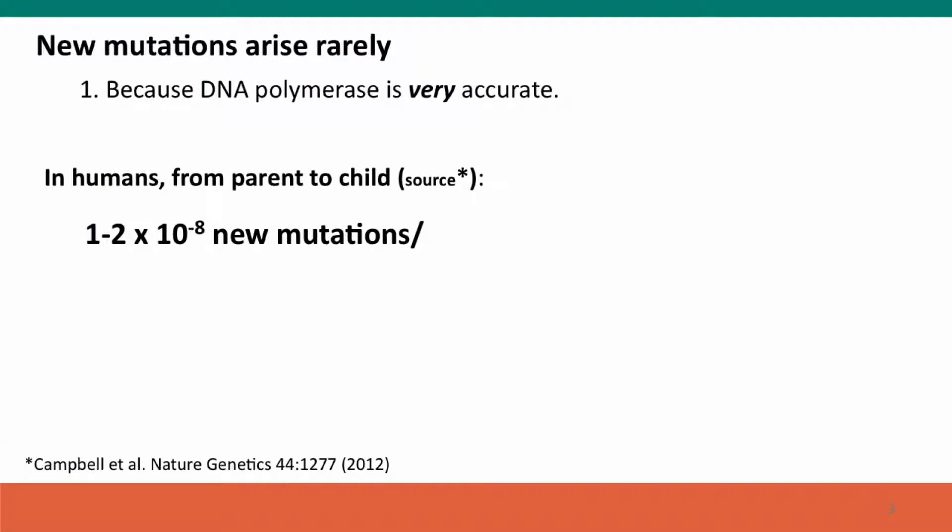As we said in the previous lecture, new mutations arise rarely, in part because DNA polymerase is very accurate. So we'll start by extrapolating — thinking about mutation rates, whereas before we were thinking about error rates in DNA replication.